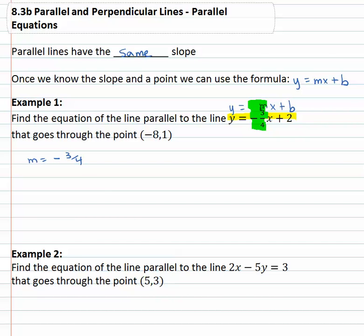And since parallel lines have the same slope, our line has the exact same slope of negative three-fourths.